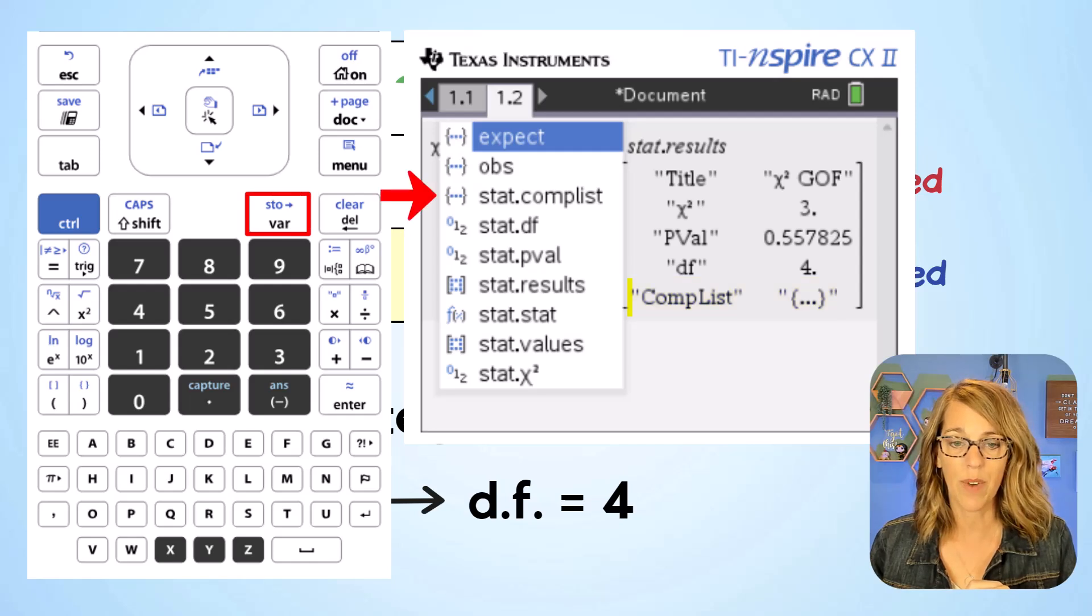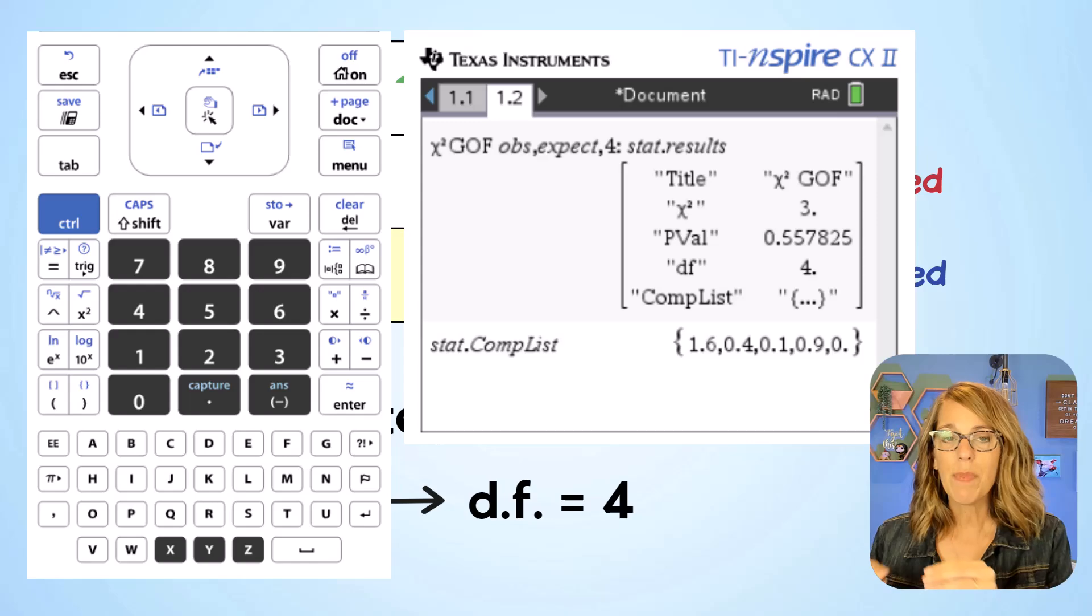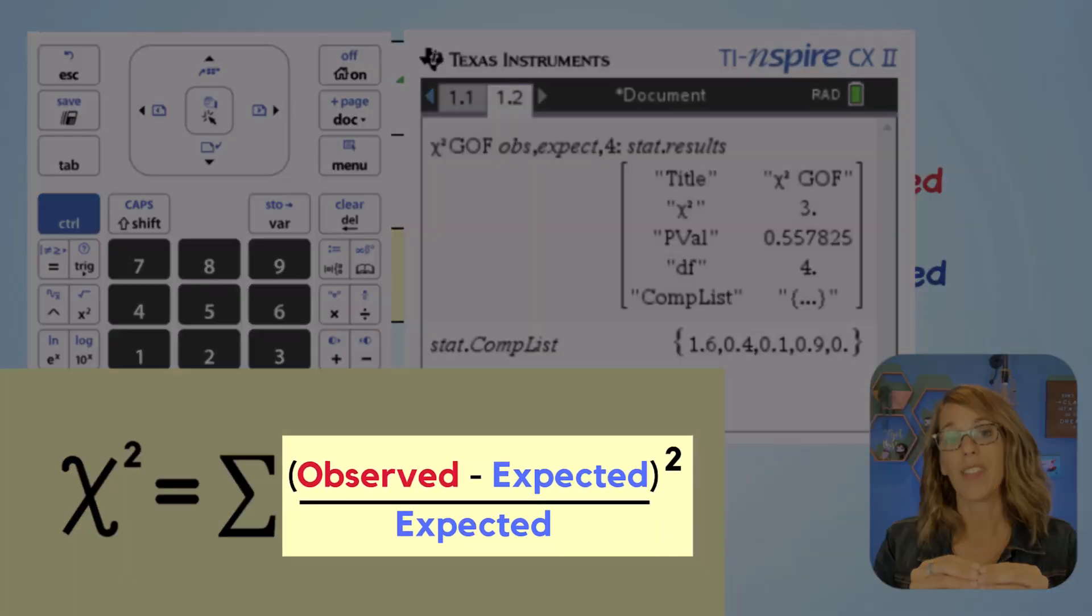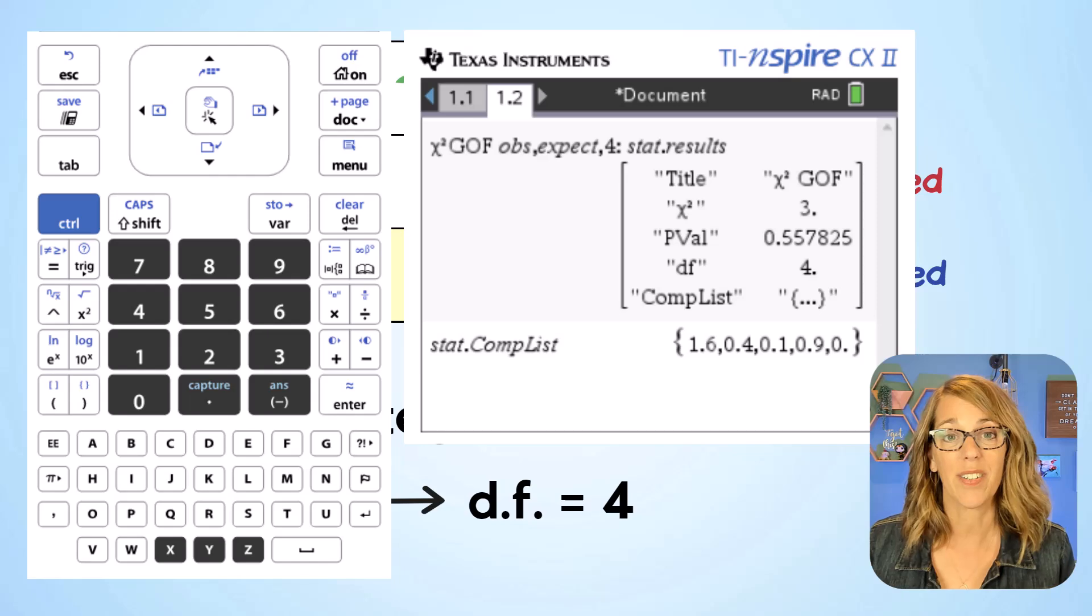So you'll see that that comp list is right here. Let's arrow down to it and then hit enter. It gives me those individual values that the formula then adds up. Let's use that chi-square value to finish off our goodness of fit test.